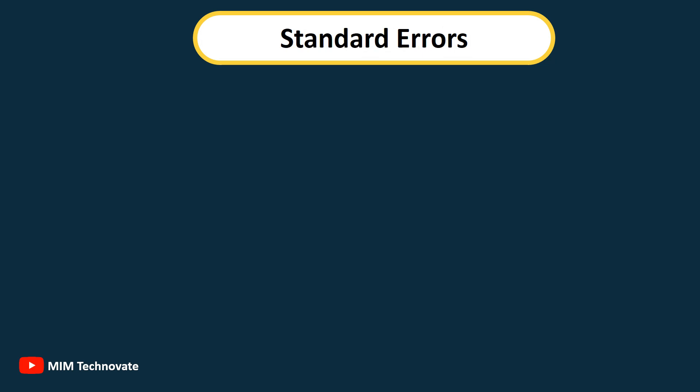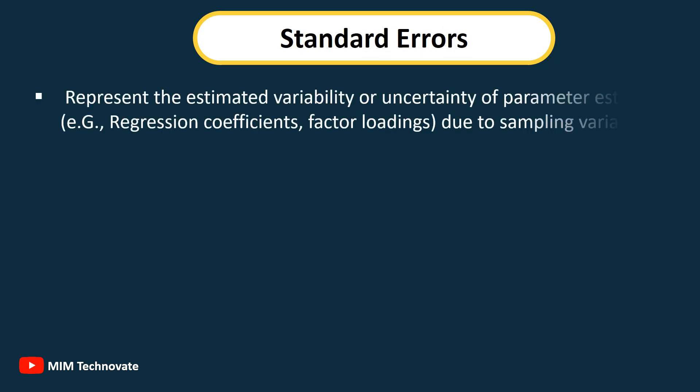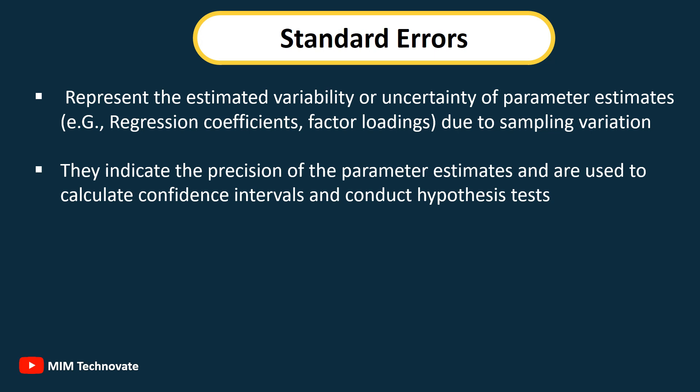Standard Errors: Represent the estimated variability or uncertainty of parameter estimates (e.g., regression coefficients, factor loadings) due to sampling variation. They indicate the precision of the parameter estimates and are used to calculate confidence intervals and conduct hypothesis tests.